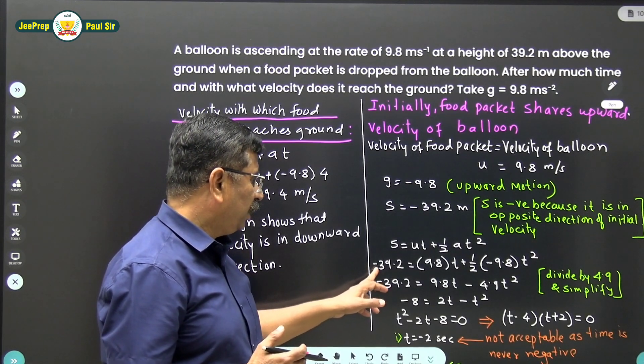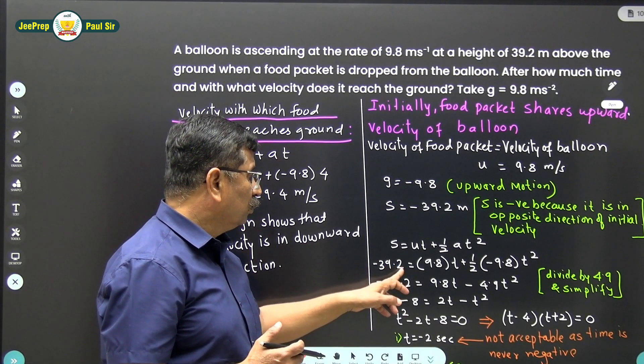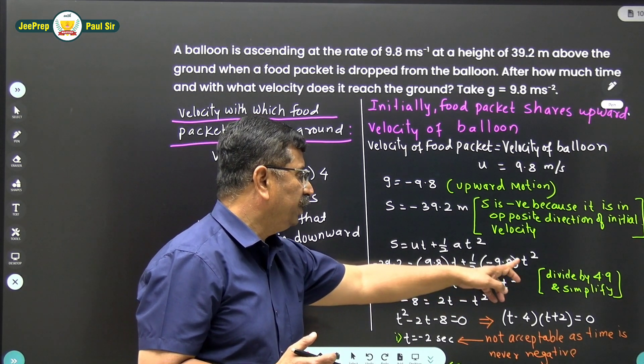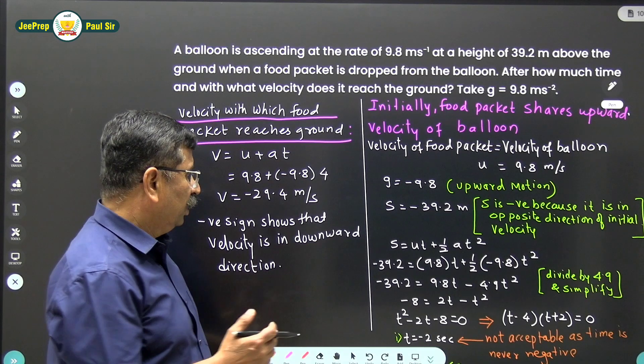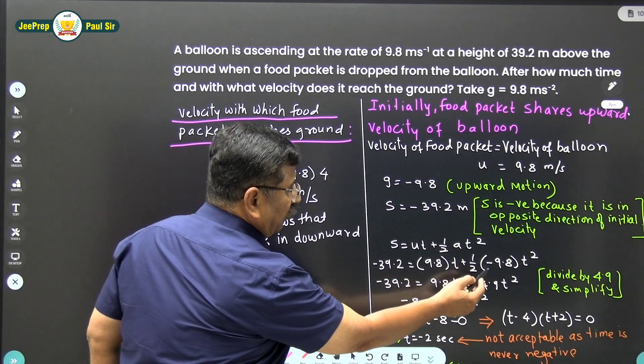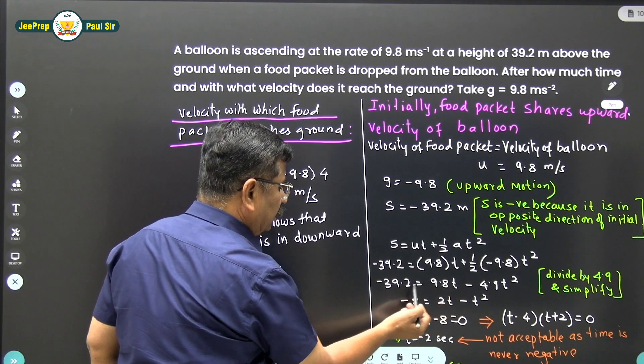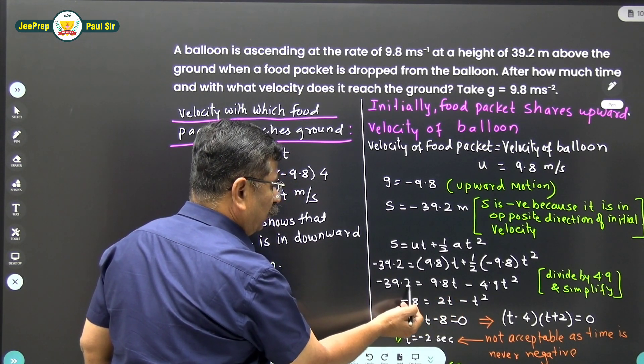So I will get the equation: minus 39.2 equals 9.8 times t plus half times minus 9.8 times t squared. This becomes minus 4.9 t squared and 9.8 t, which equals minus 39.2.